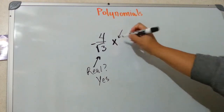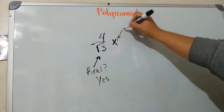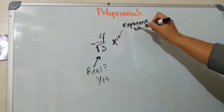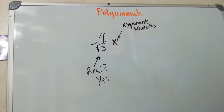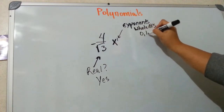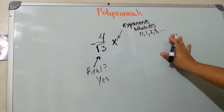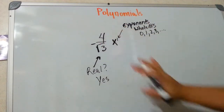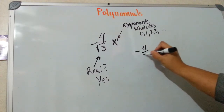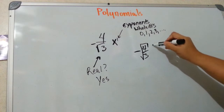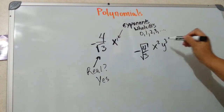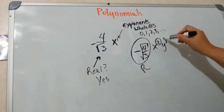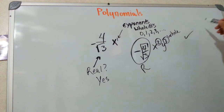Now check the exponent. In this example the exponent is one — that's good. You want your exponents to be whole numbers. That means 0, 1, 2, 3 — but you can't have decimals, fractions, or negatives. You can only have whole numbers. Even if the whole thing is under the radical, if you have x squared y to the third, this is still a polynomial. The coefficient is real and both exponents are whole. So yes, it's a polynomial.